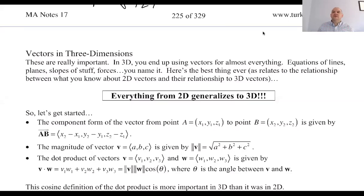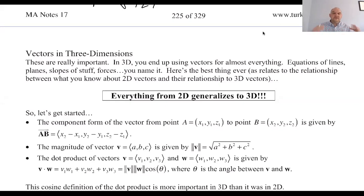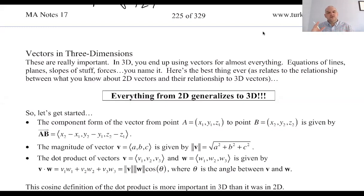I am back and we are going to be on page 226 of note 17, and we're talking about vectors in three dimensions. Vectors in three dimensions are incredibly important. They kind of are the building blocks of all your thought processes. We even saw when we talked about the distance formula — the easiest thing to do is make a vector from A to B and find the norm of that vector. That's the kind of thinking we want to utilize here. Basically everything we learned in two dimensions is going to generalize to three dimensions.